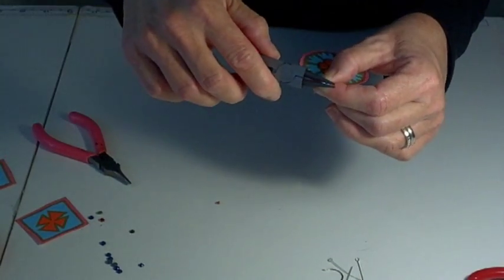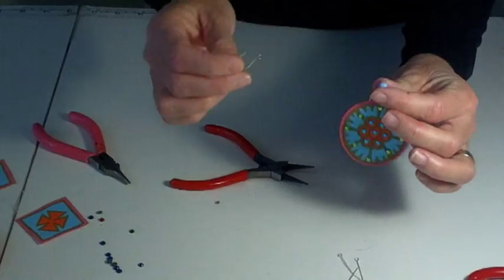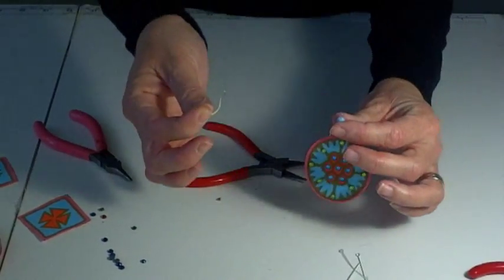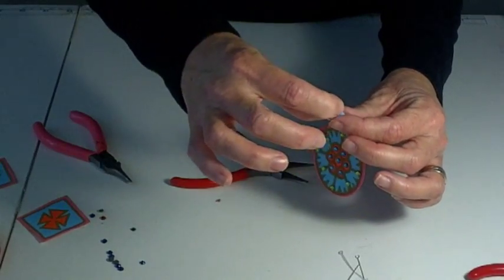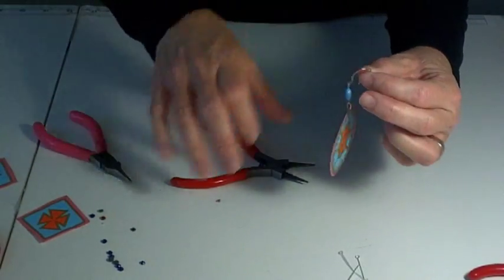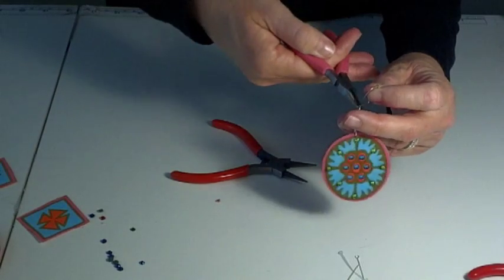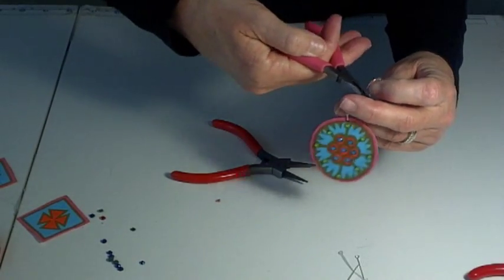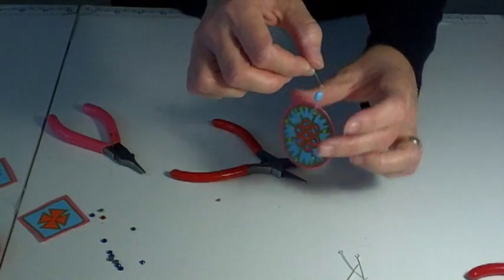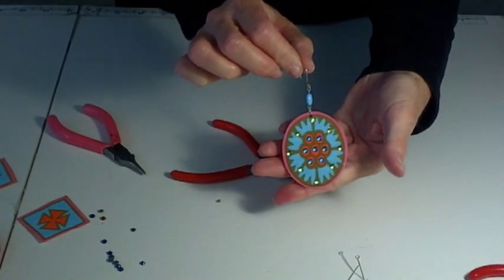So the next thing to do is to add your earring finding. And you can just go ahead and string that on, close it. There you have your earring.